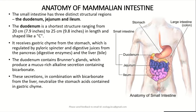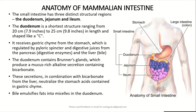The emulsification of fats occurs in the duodenum. As we know, fats are not easily soluble in water, but because of this alkaline environment of the duodenum, the fats turn into small vesicles called micelles.